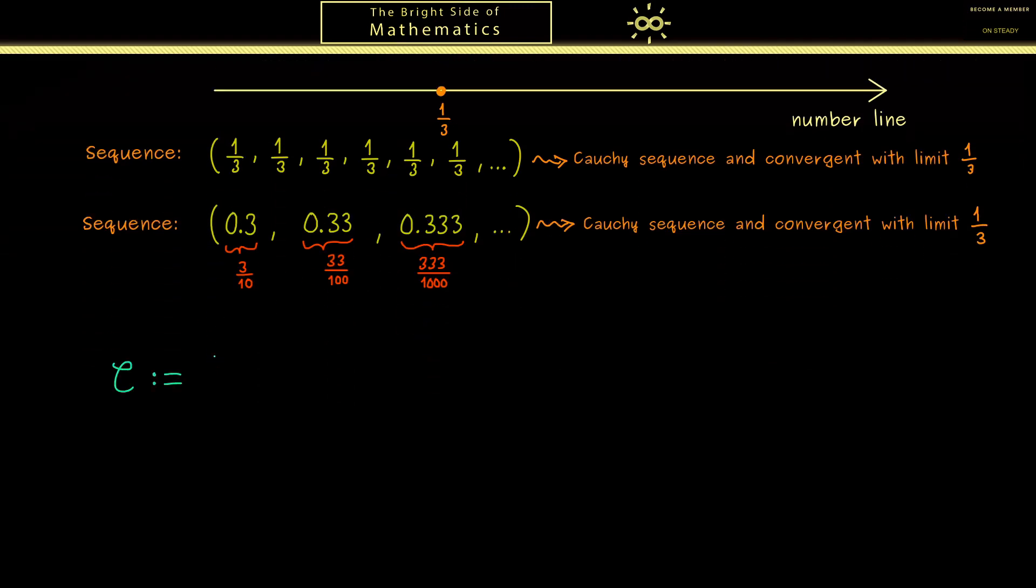The first step is to define the set of all the Cauchy sequences we consider. So here (xₙ) stands for a sequence, which means an infinite list with the properties that for all natural numbers n, xₙ is a rational number, and that the sequence (xₙ) is indeed a Cauchy sequence. And this nice set that contains all the Cauchy sequences is denoted by C.